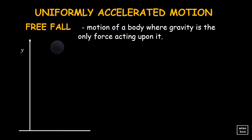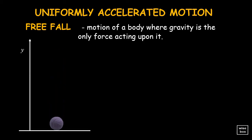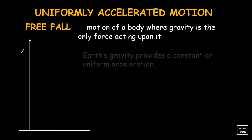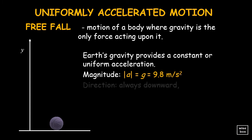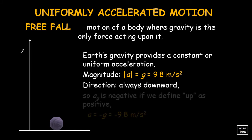Free fall is any motion of a body where gravity is the only force acting upon it. Earth's gravity provides a constant or uniform acceleration. Its magnitude is 9.8 meters per second squared. The direction is always downward, thus it has a negative sign.